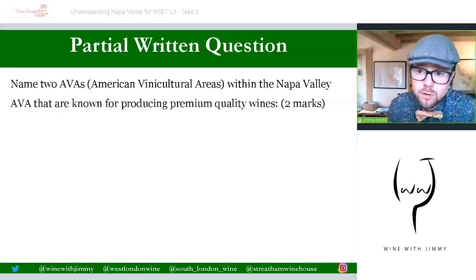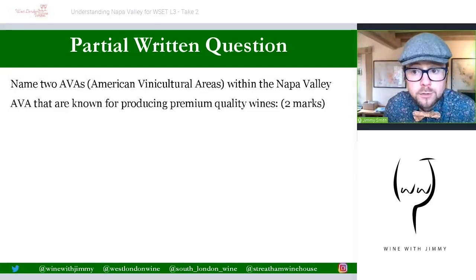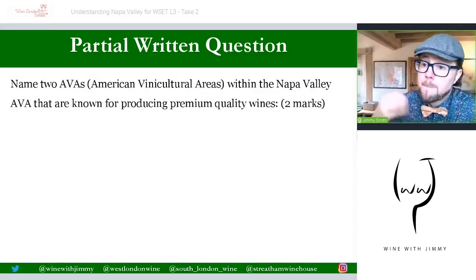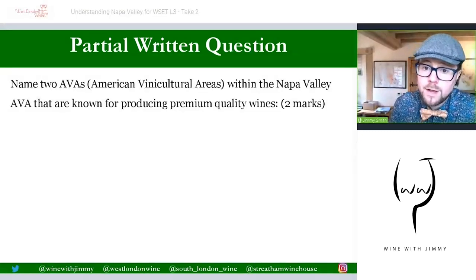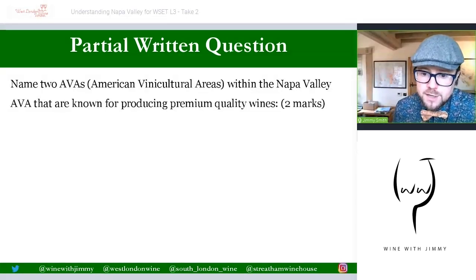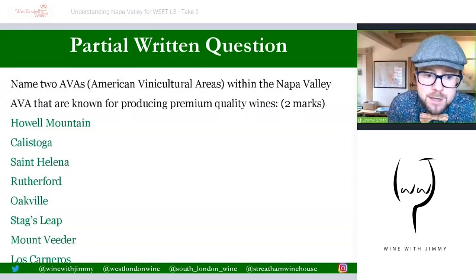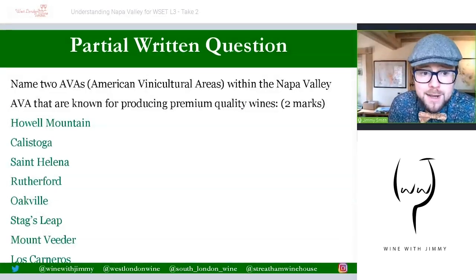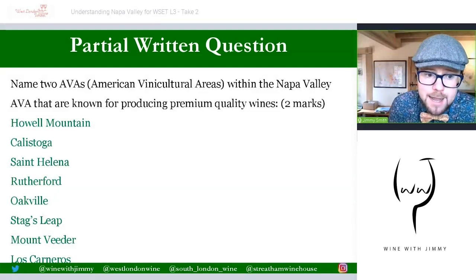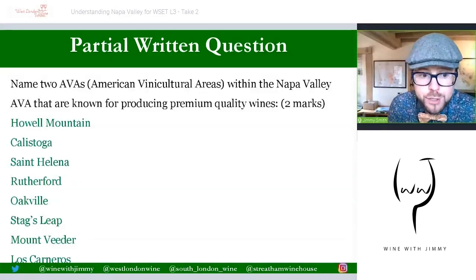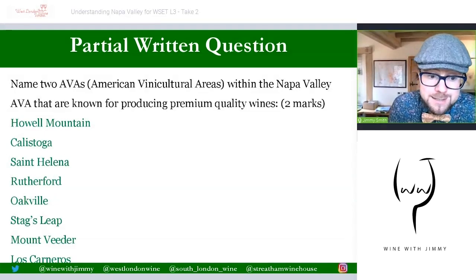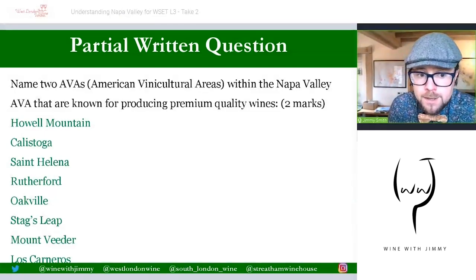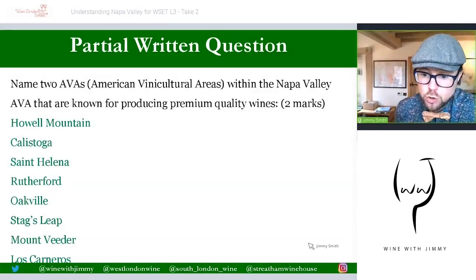Here is a short written answer question — the all-important part of your Level 3 examination, which is the most challenging part for students across the world. 'Name two AVAs — American Viticultural Areas — within the Napa Valley that are known for producing premium quality wines.' You can name any two of these, as these are the ones listed in your Level 3 text: Howell Mountain, Calistoga, St Helena, Mount Veeder — higher altitude zones — and then Rutherford, Oakville, Stags Leap, and Los Carneros.